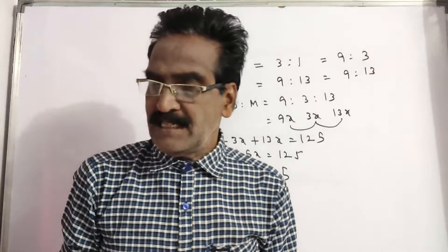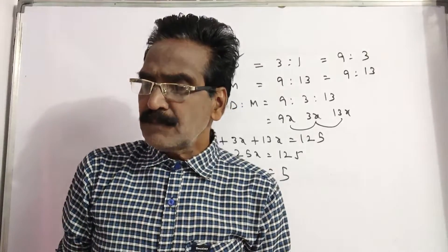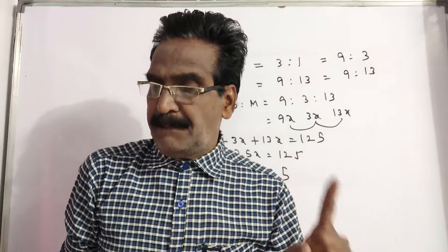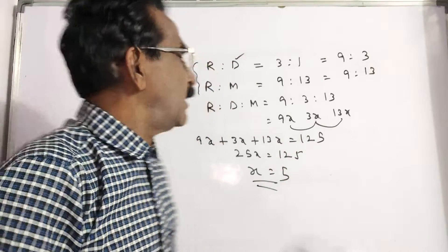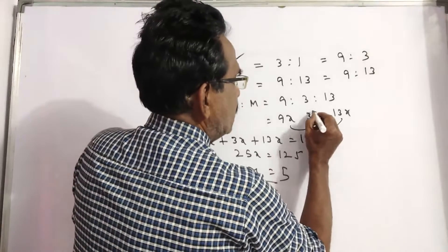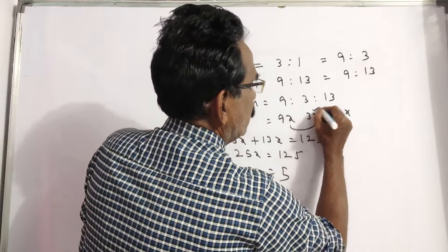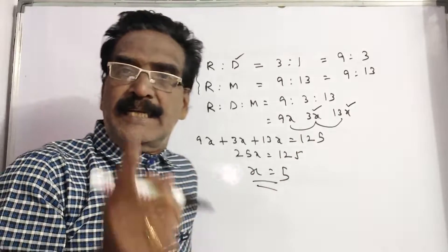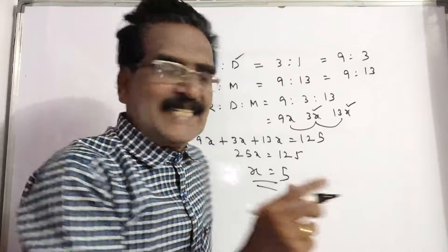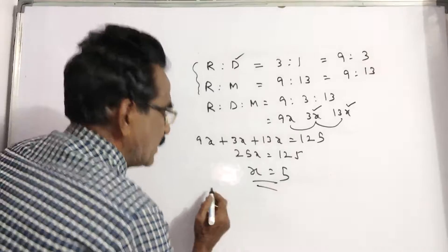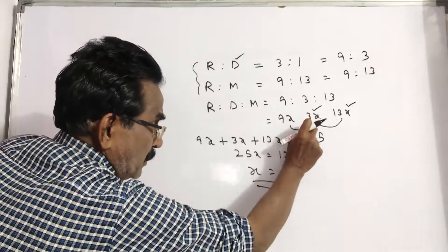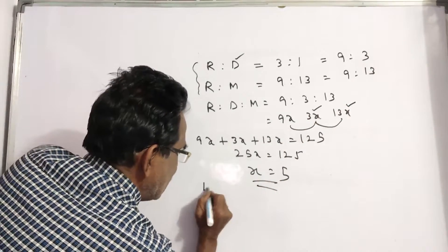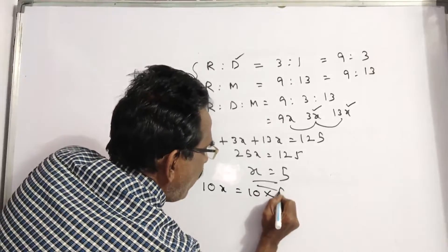Now the question is, what is the difference between the present ages of Raman's daughter and Raman's mother? The difference between Raman's daughter and Raman's mother is thirteen X minus three X, ten X, that is equal to ten into five.